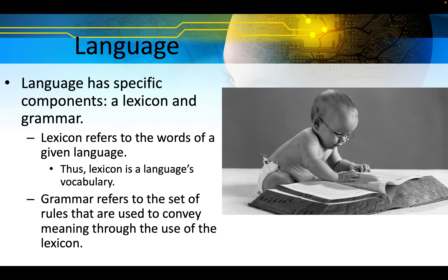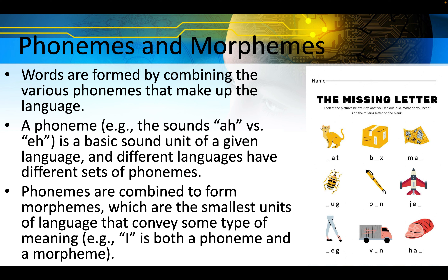Language has specific components: a lexicon and grammar. Lexicon refers to the words of a given language — it is the language's vocabulary. Grammar refers to the set of rules that are used to convey meaning through the use of the lexicon. Words are formed by combining various phonemes that make up the language. A phoneme is a basic sound unit of a given language, and different languages have different sets of phonemes. Phonemes are combined to form morphemes, which are the smallest units of language that convey some type of meaning. For example, 'I' is both a phoneme and a morpheme.